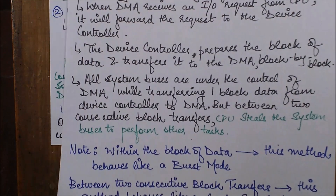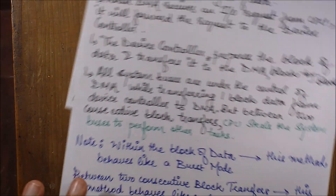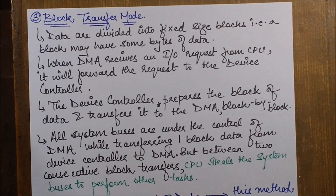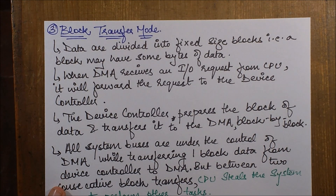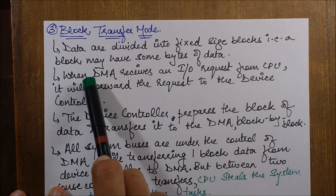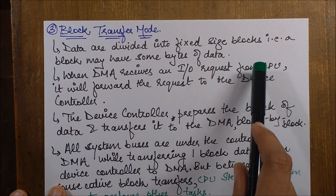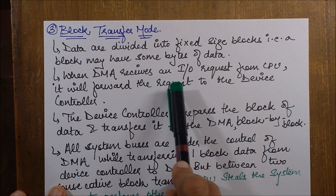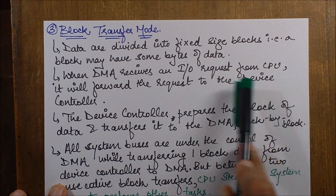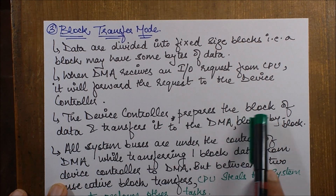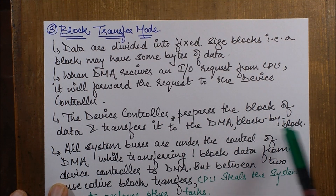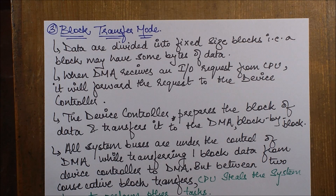The most important mode is block transfer mode, which is a hybrid of both burst mode and cycle stealing mode. In this case, data is divided into fixed-size blocks — a block may have some bytes of data. When the DMA receives an I/O request from the CPU, it forwards the request to the device controller. The device controller prepares the block of data and transfers it to the DMA block by block.